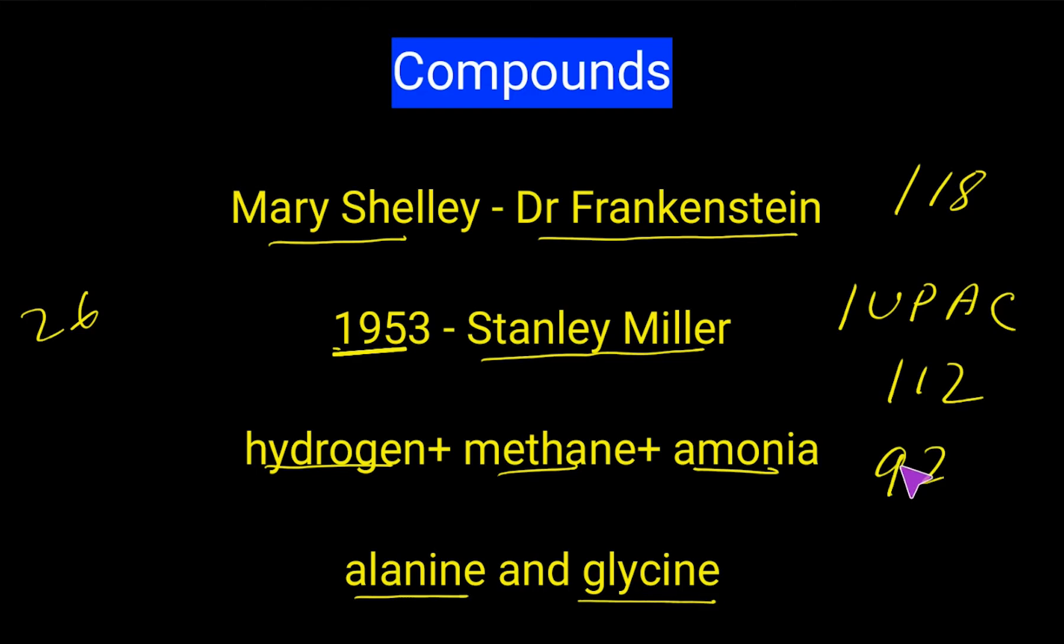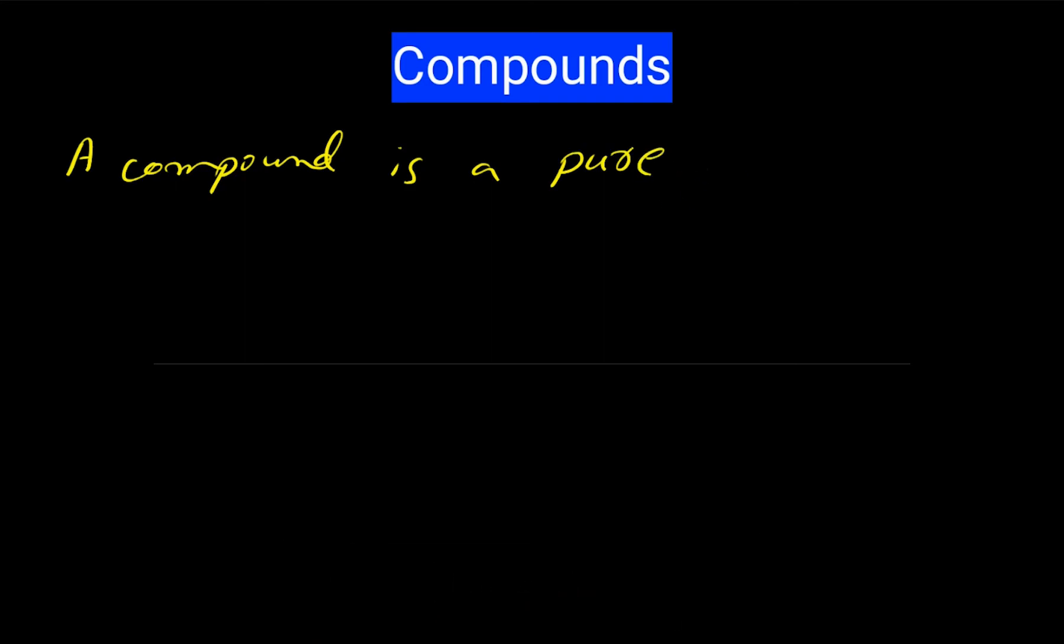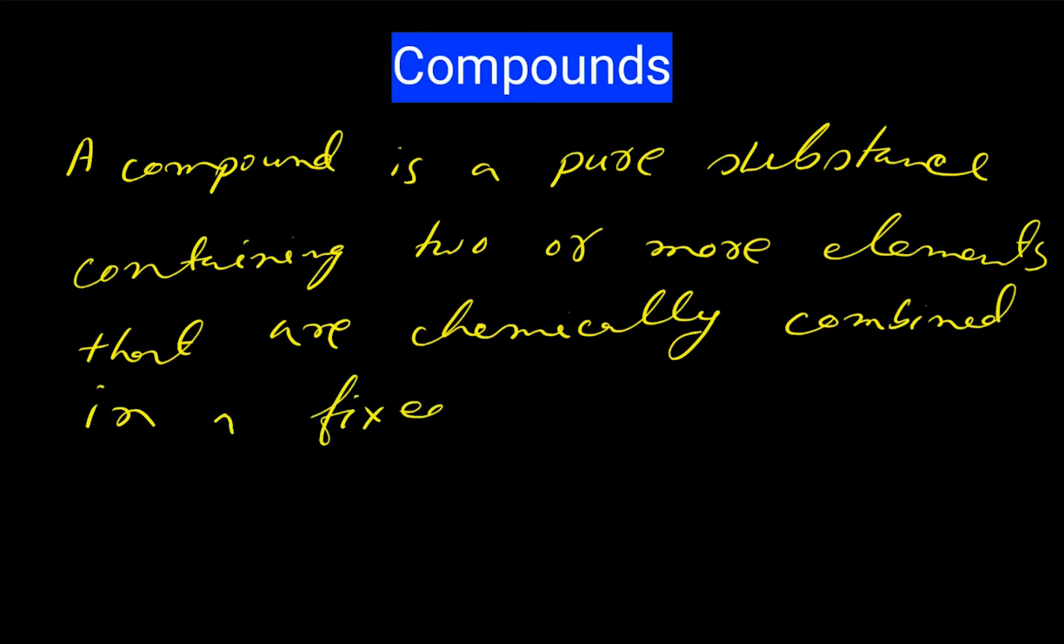These elements can combine to form thousands of different compounds. So we can define a compound. A compound is a pure substance containing two or more elements that are chemically combined in a fixed ratio. You should remember it is written pure substance containing two or more elements that are chemically combined in a fixed ratio. The ratio will not be changed.